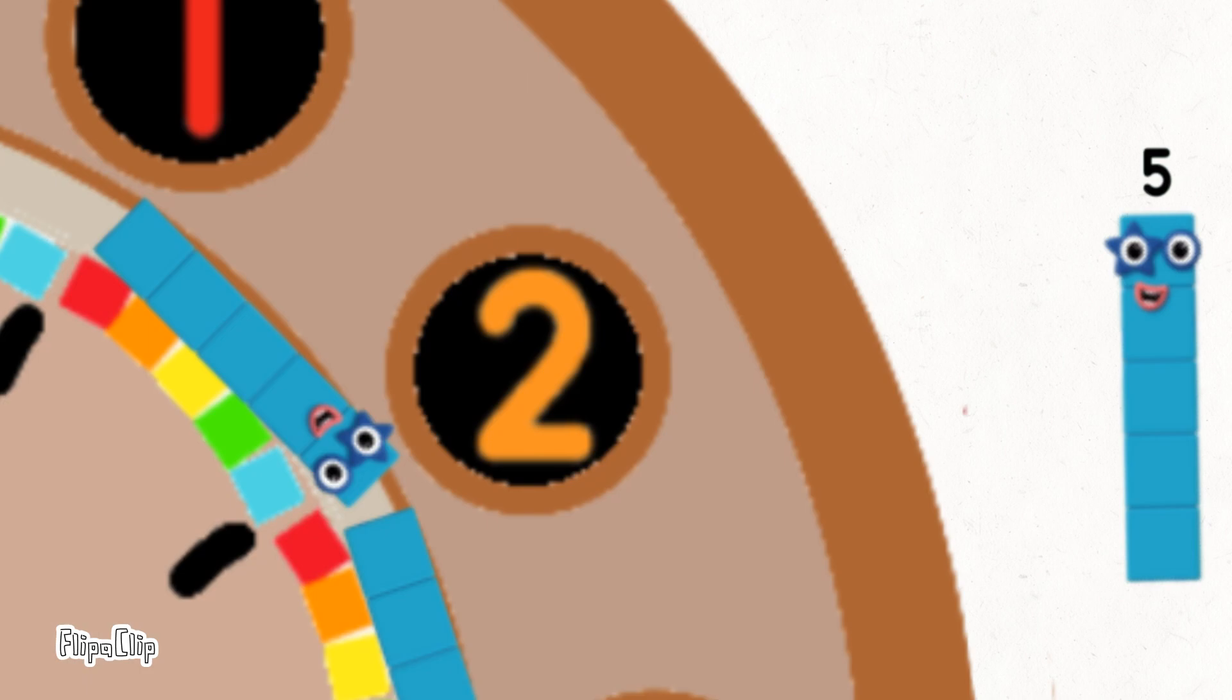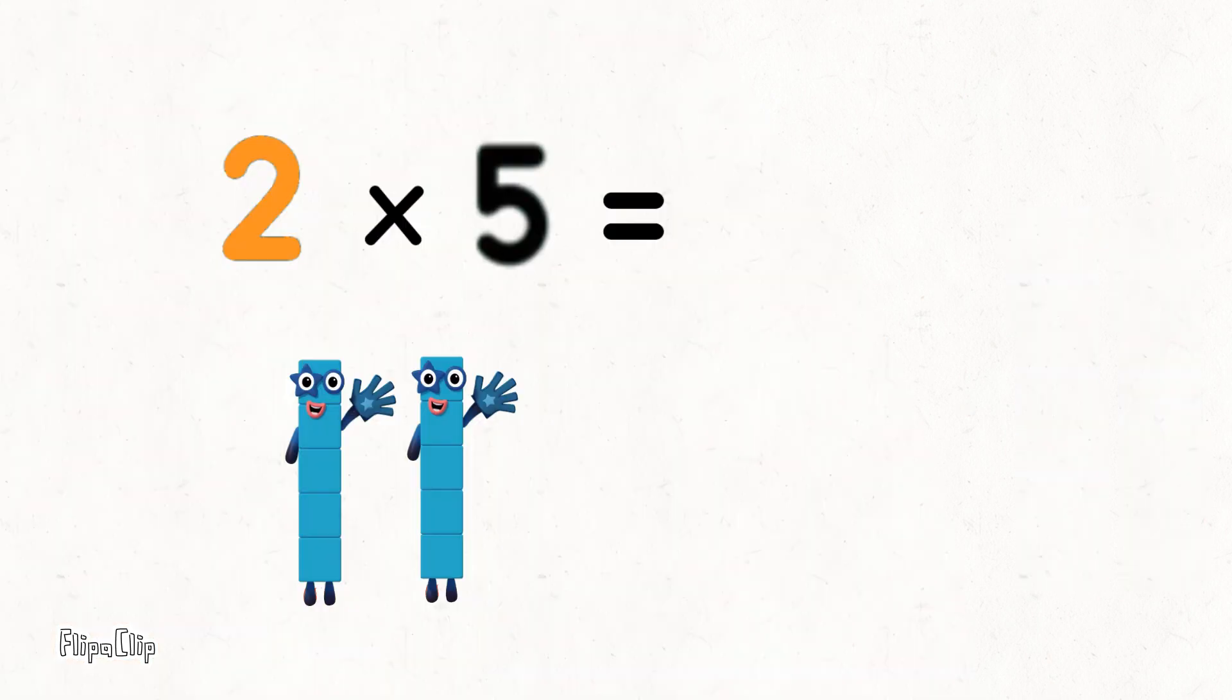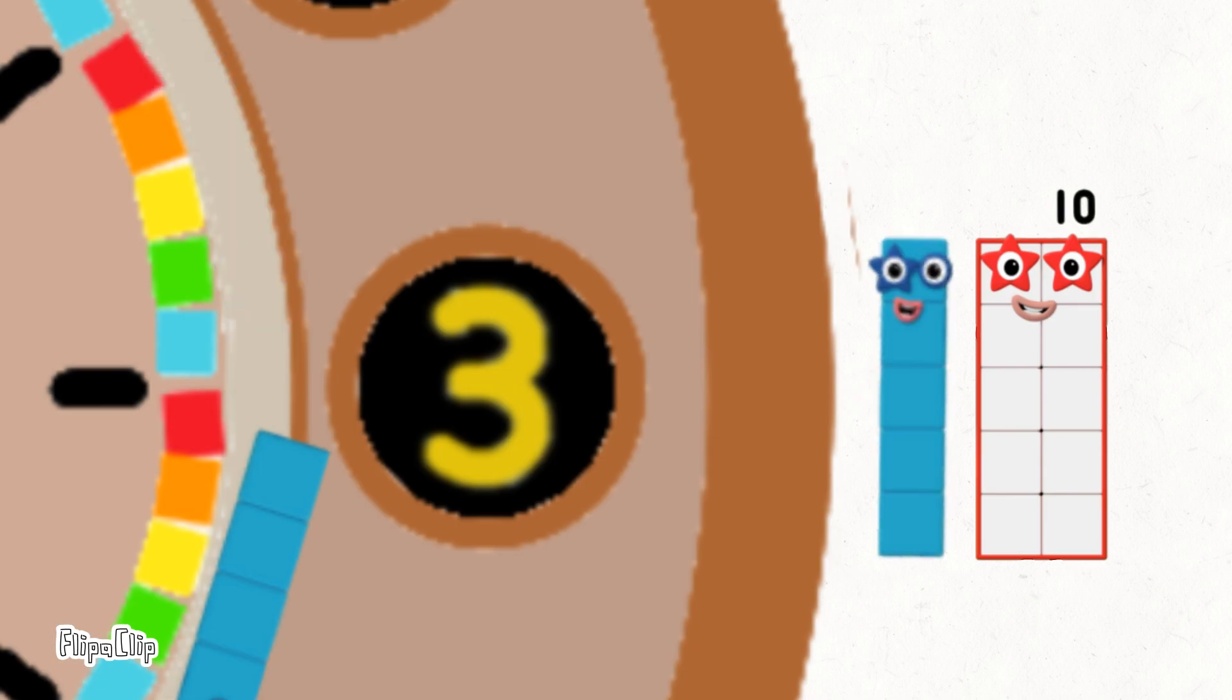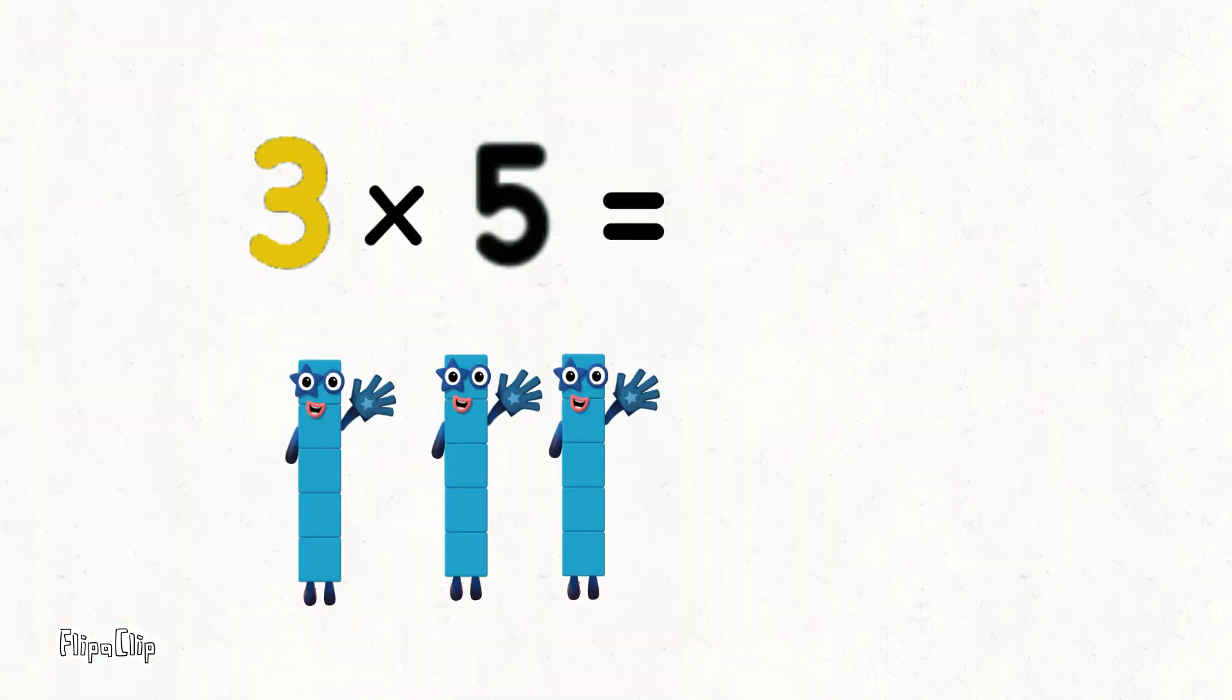Then here come five more and the big hand arrives at two lots of five. Ten, ten minutes, as we reach number three, it's easy to see. Three lots of five are fifteen.